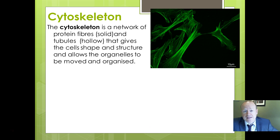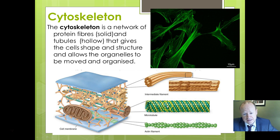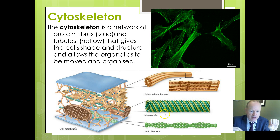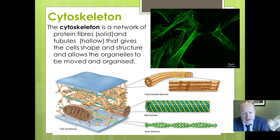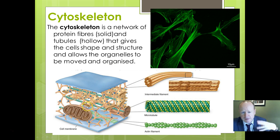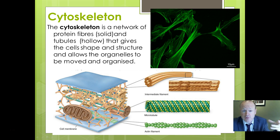The cytoskeleton is a network of protein fibers and tubules. A microtubule is hollow — like a pipe with a lumen — whereas filaments or fibers are solid and do not have a hole down the middle. Both provide what you'd expect from a skeleton: shape, support, and structure, and they are also involved in movement.